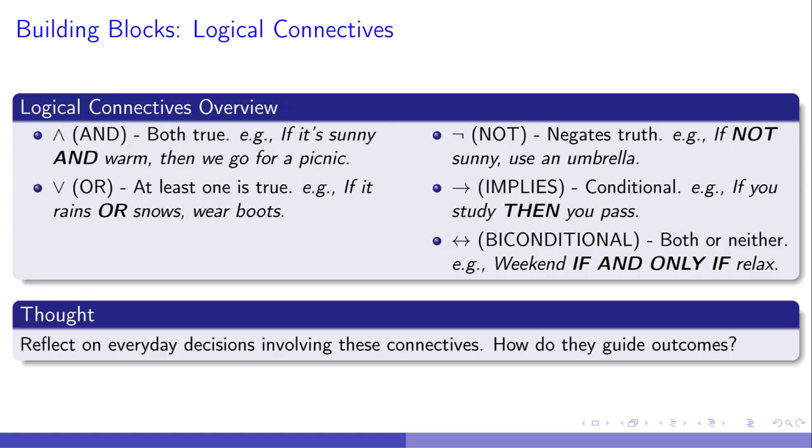Transitioning from the singularity of the existential quantifier, we dive into logical connectives, our decision-making framework. Consider AND, a sunny and warm day means picnic-ready conditions requiring both elements. OR offers a choice, it's either rain or snow to prompt boot wearing. NOT then flips the scene. Not sunny suggests umbrella use. IMPLIES is about causality, like studying leading directly to passing, capturing a sequence. BICONDITIONAL is about strict companionship, where weekends imply relaxation, and vice versa. These connectives are the tools through which we construct and navigate the complexities of logical thought and everyday decisions. Stepping forward, we'll see how these building blocks empower us to dissect and assemble arguments with precision.